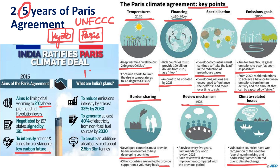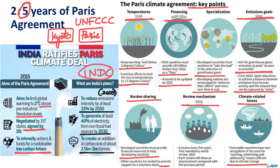Under the Paris Agreement, INDCs — Intended Nationally Determined Contributions — are proposed, and every country has submitted theirs. According to India's INDCs, India will reduce emission intensity by at least 33% by 2030 compared to 2005 levels, generate at least 40% of electricity from non-fossil fuel sources by 2030, and create an additional carbon sink of about 2.5 to 3 billion tons by 2030.